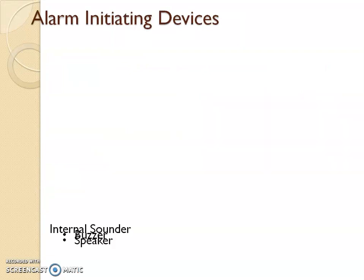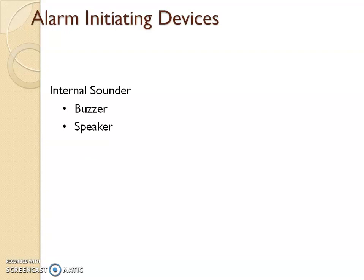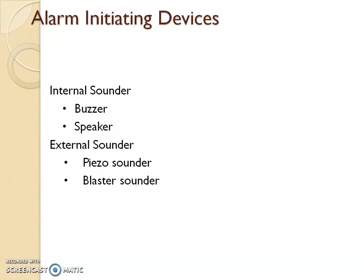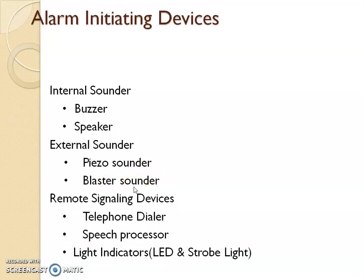Now we go to the alarm initiating devices. The main purpose of these devices is to create noise. For internal sound, you have a buzzer and sometimes a speaker. The buzzer creates only noise, while the speaker can give an instruction such as 'Fire in the building, please evacuate immediately' or 'Intruder inside the building, take preventive actions.' For the external sounder, this happens outside the building and creates a pulsed sounder or blaster sounder. These devices are primarily there to create noise outside the building.